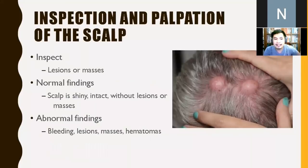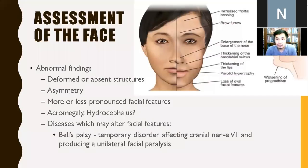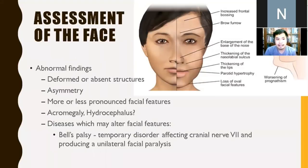Inspect for lesions and masses. Normal finding: the scalp is shiny with no dandruff. Abnormal: bleeding, other lesions, or hematomas. Inspect the shape of the face — normal findings include symmetrical features, equal palpebral fissures, and an oval, round, or slightly square face shape. Abnormal findings include deformities, asymmetry, acromegaly, or hydrocephalus.